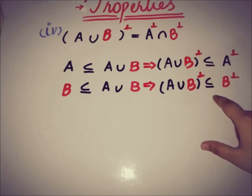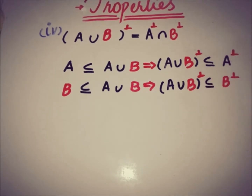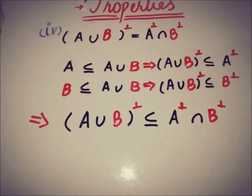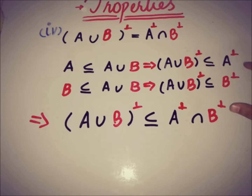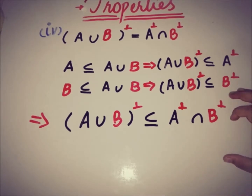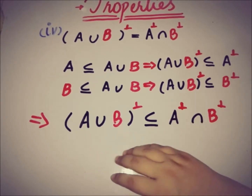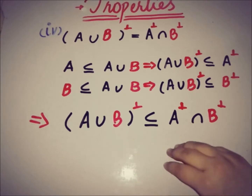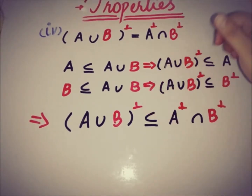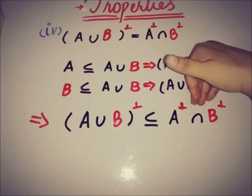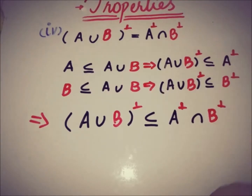Taking the intersection of both results, we get that (A ∪ B) annihilator is a subset of A annihilator ∩ B annihilator. So we have proved that (A ∪ B) annihilator ⊆ A annihilator ∩ B annihilator. Now the target is to prove the reverse subset.